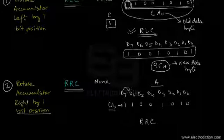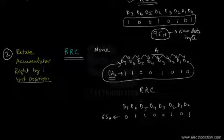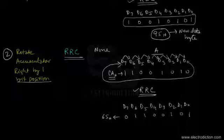With RRC: D7 becomes D6, D6 becomes D5, D5 becomes D4, D4 becomes D3, and it goes on in this way. Finally, bit D0 becomes bit D7 — the bit at the D0 position is shifted to the D7 position. Let's check the new data content in the accumulator after executing RRC once — all the data bytes have been shifted towards the right by one bit position, and the bit at D0 has occupied the D7 position.